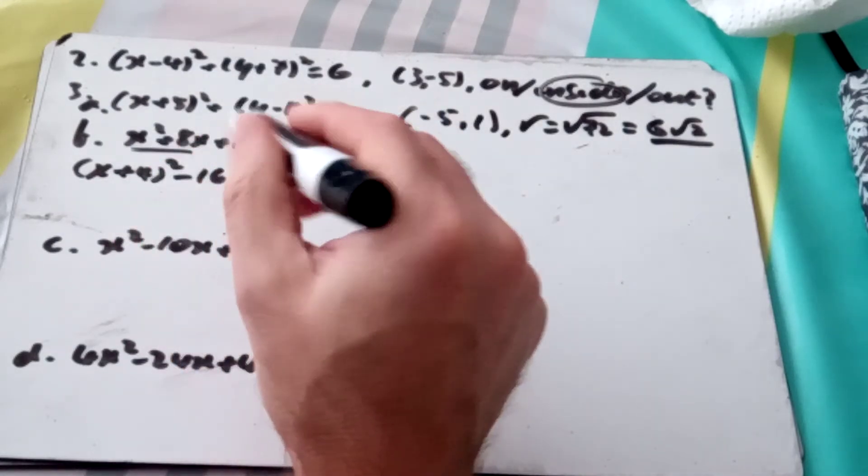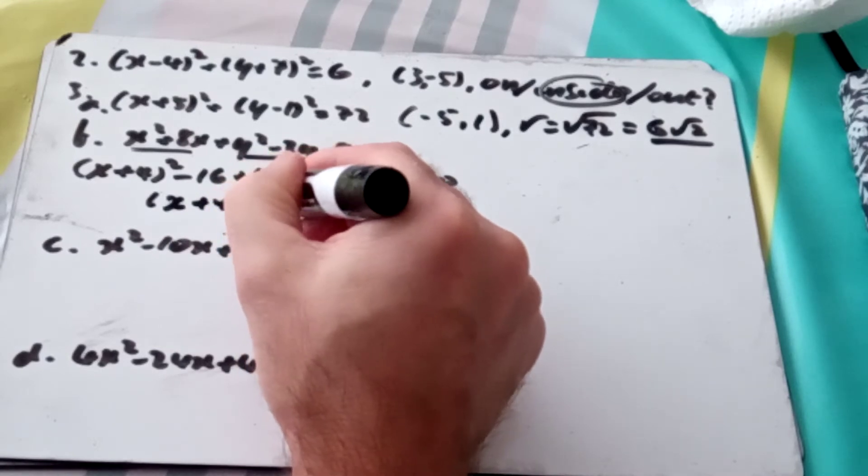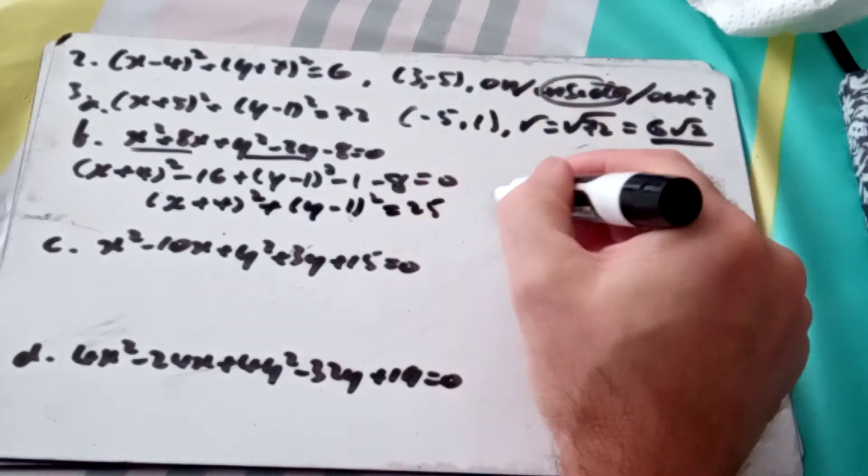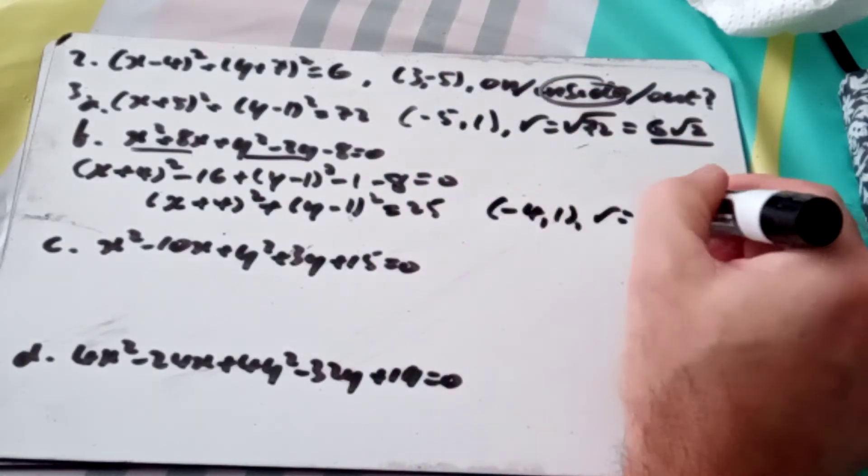So all of a sudden I've got 16, 1 and 8 to move to the other side to give me 25. So I can state that, if I need to rewrite it first to make it more obvious, (x + 4)² + (y - 1)² = 25. So my center is (-4, 1) and r is √25, which is 5.